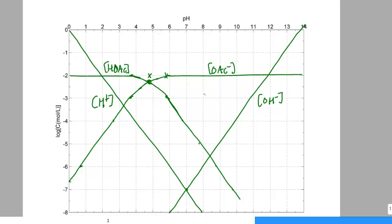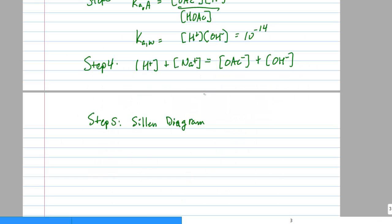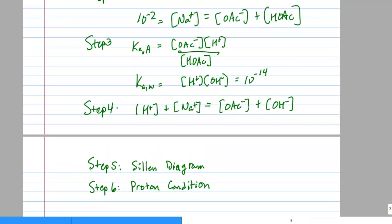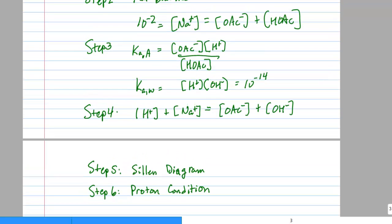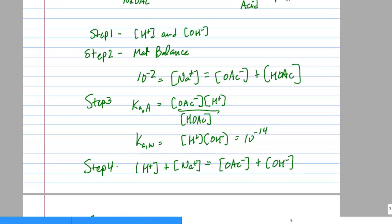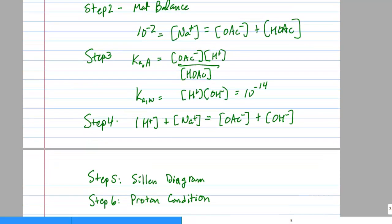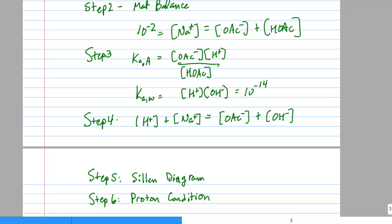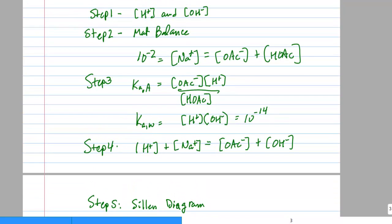And that completes the Sillén diagram. And now we're ready to use it. So step five was the Sillén diagram. And I've got that constructed. Step six is to develop the proton condition. Now in step six, what I want to do is I want to go back to my charge balance in step four and look also at the material balance and try to eliminate all the largest numbers.